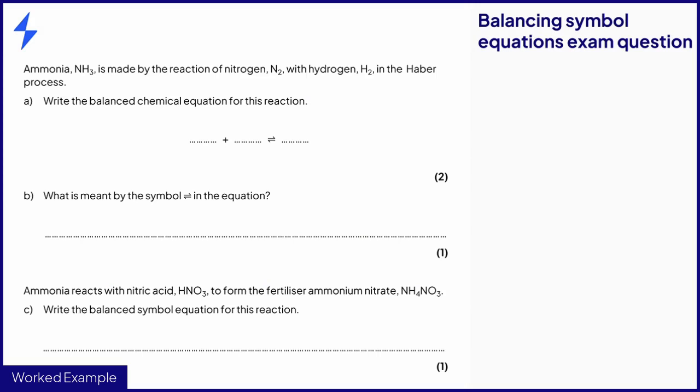The key information in part A is NH3 is made by the reaction of N2 with H2. Be careful, as the information is written backwards with the product showing first. This means that the unbalanced equation is N2 plus H2, forming NH3, for one mark.